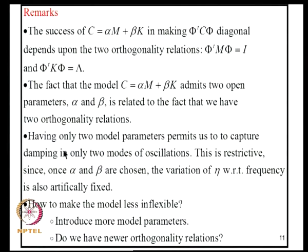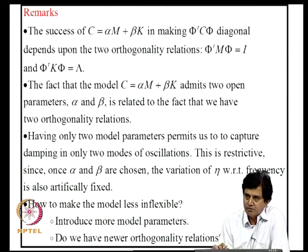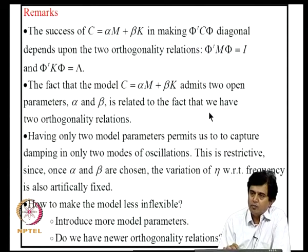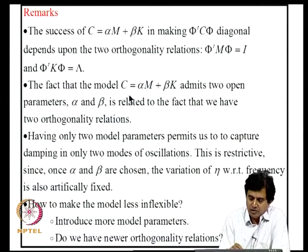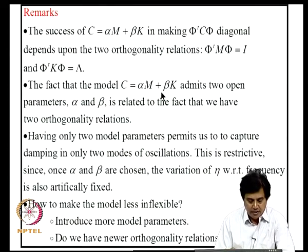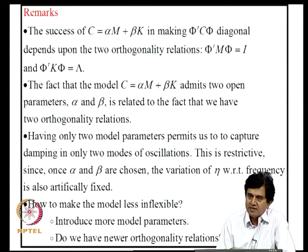Having only two model parameters means we can capture damping in only two modes of oscillation. Once alpha and beta are determined from two known damping ratios, the damping ratios for all other modes are automatically fixed. If we know damping for more than two modes, there is no way to accommodate that information in this model. If the resulting damping variation with frequency is deemed physically unacceptable, the model cannot be improved within the framework of proportional damping — making it somewhat inflexible.